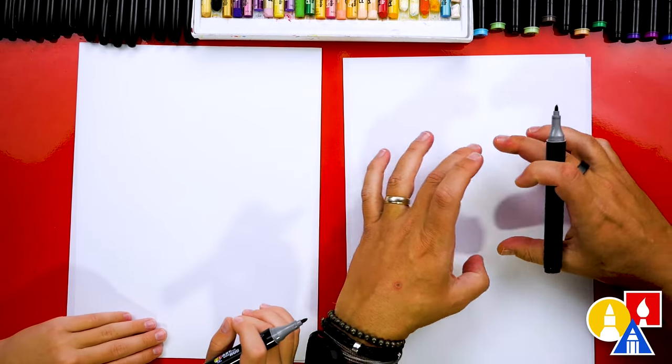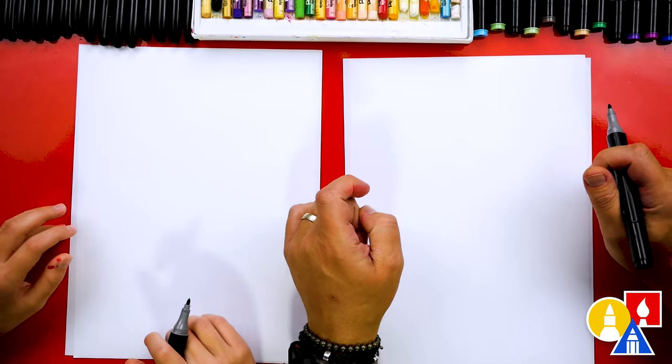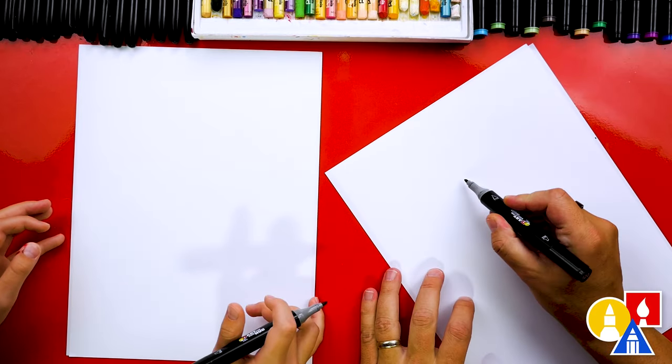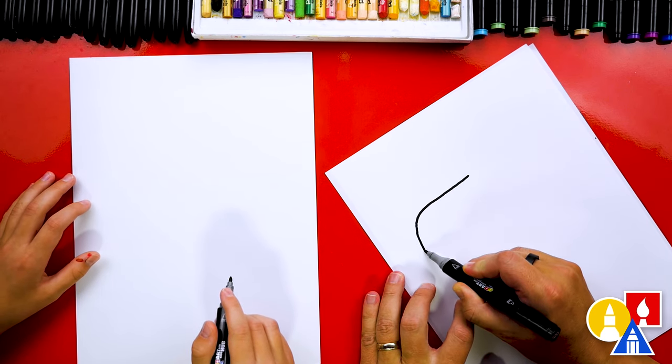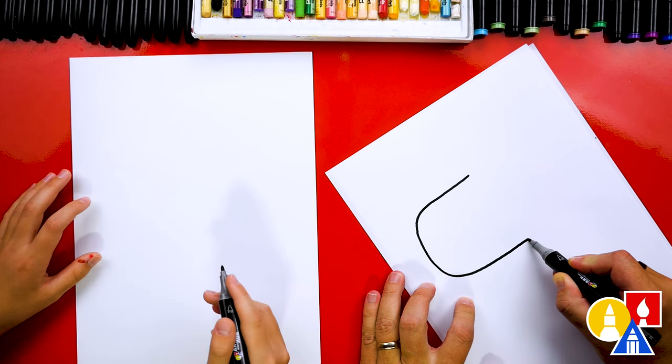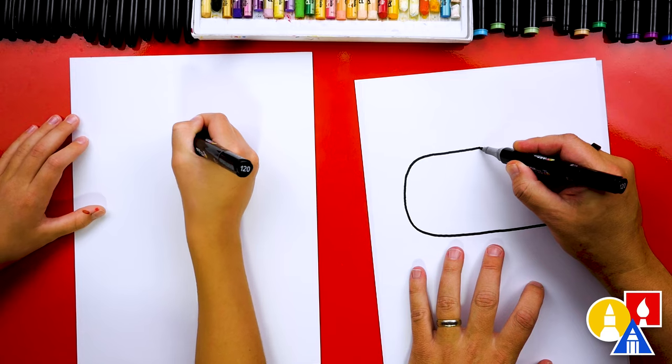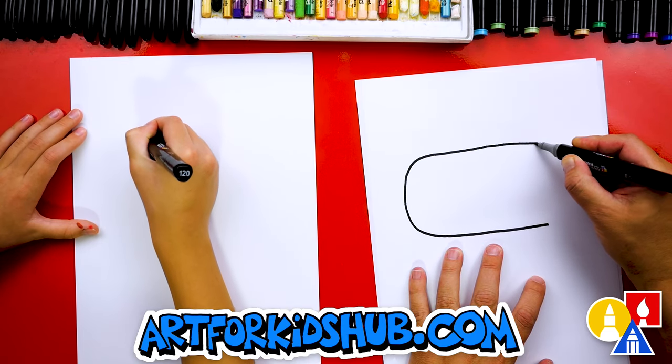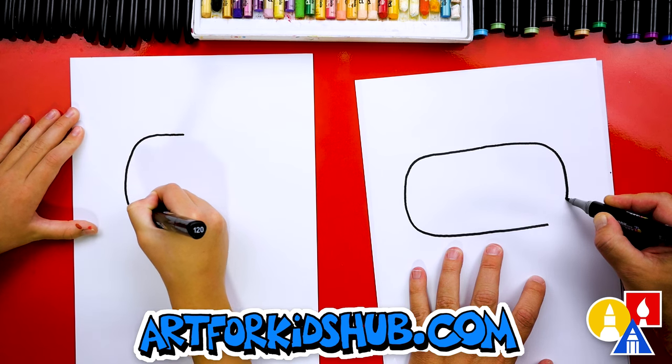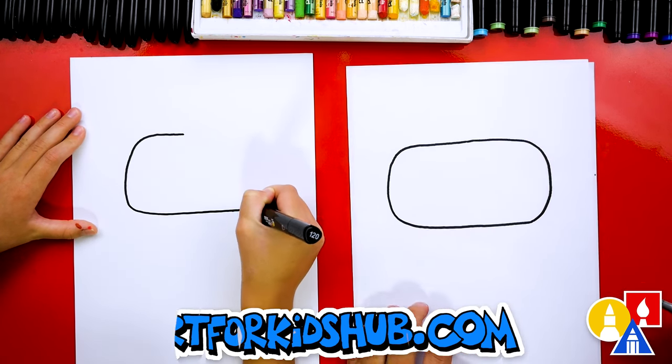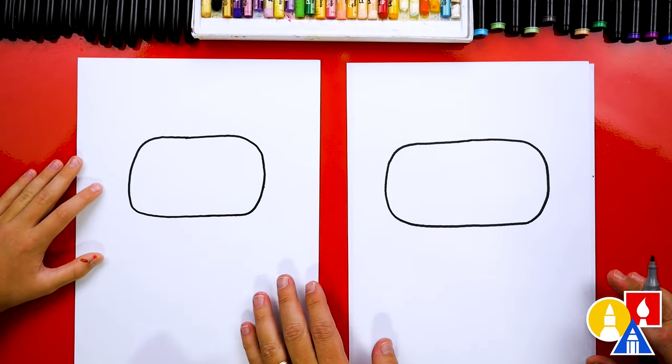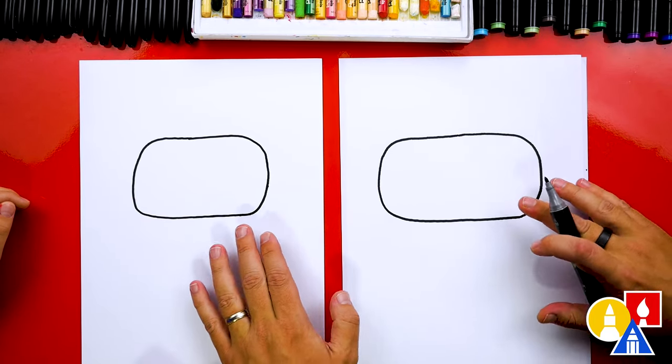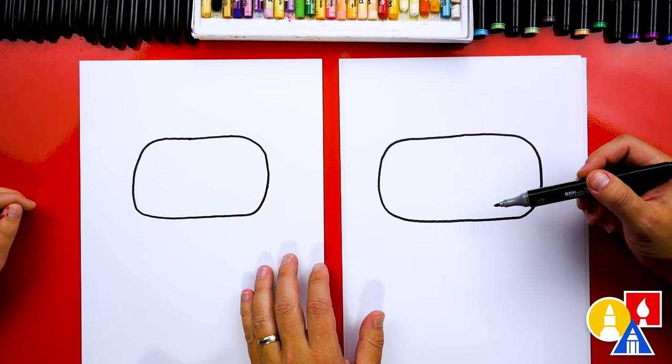We're first going to start by drawing the headset. We're going to draw the front of the headset, which is kind of a rectangle shape, but it's really round. So let's start in the middle of our paper. We're going to draw big rounded corners like this. We're going to come around. I get really quiet when I'm concentrating.